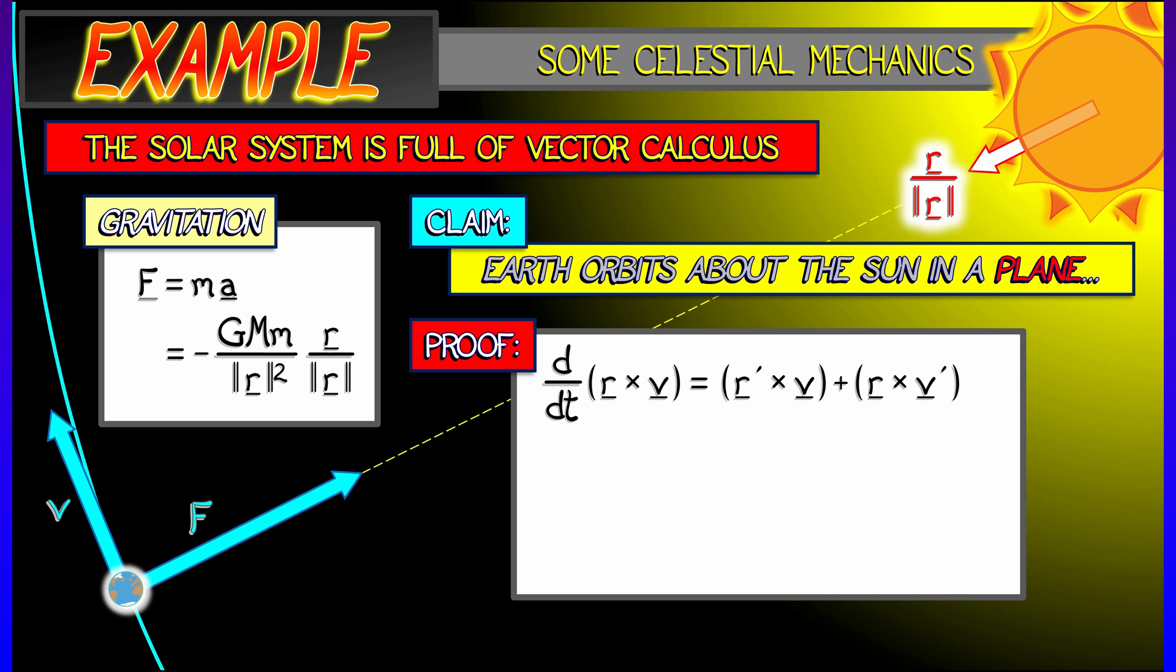I can use the product rule for the cross product to say that that derivative is r prime cross v plus r cross v prime. And now, now what can I do? I can say, well, look, r prime is really v and v prime is really a, the acceleration. And look, on the left, I have v cross v. I know from what the cross product does that that's zero.